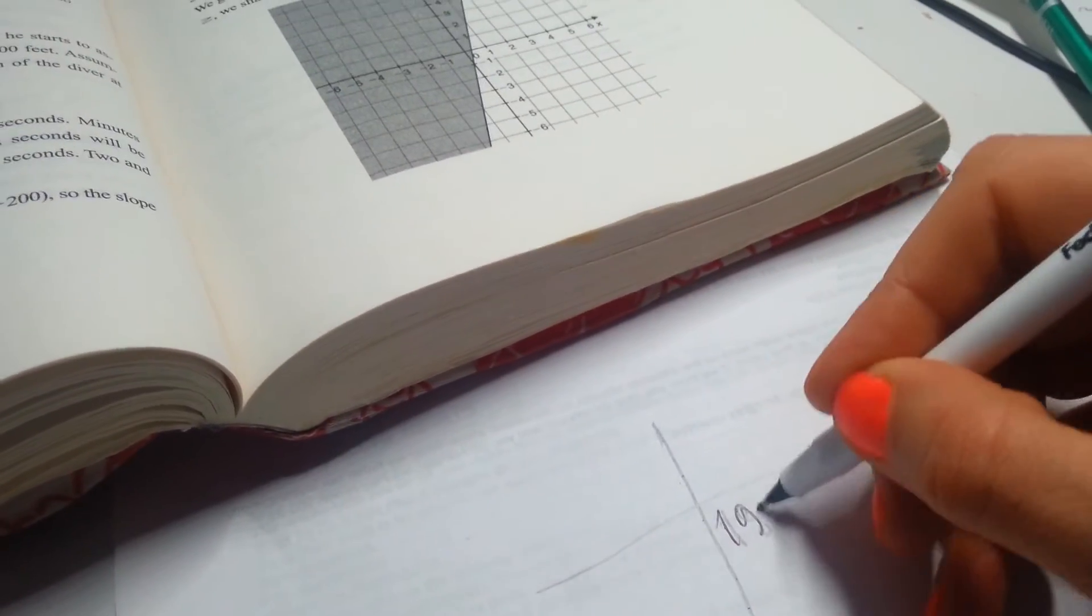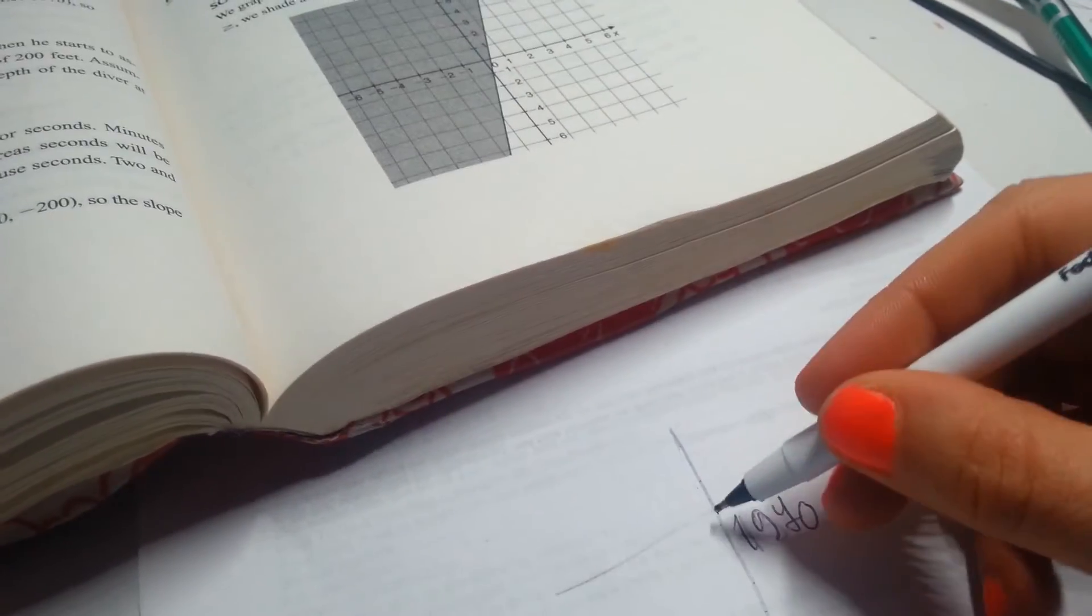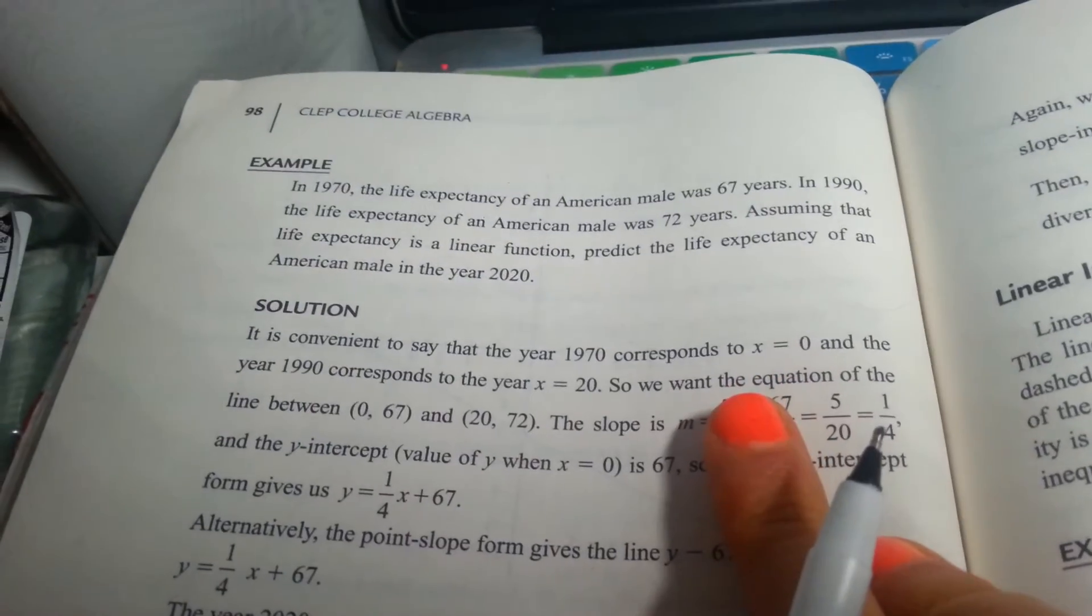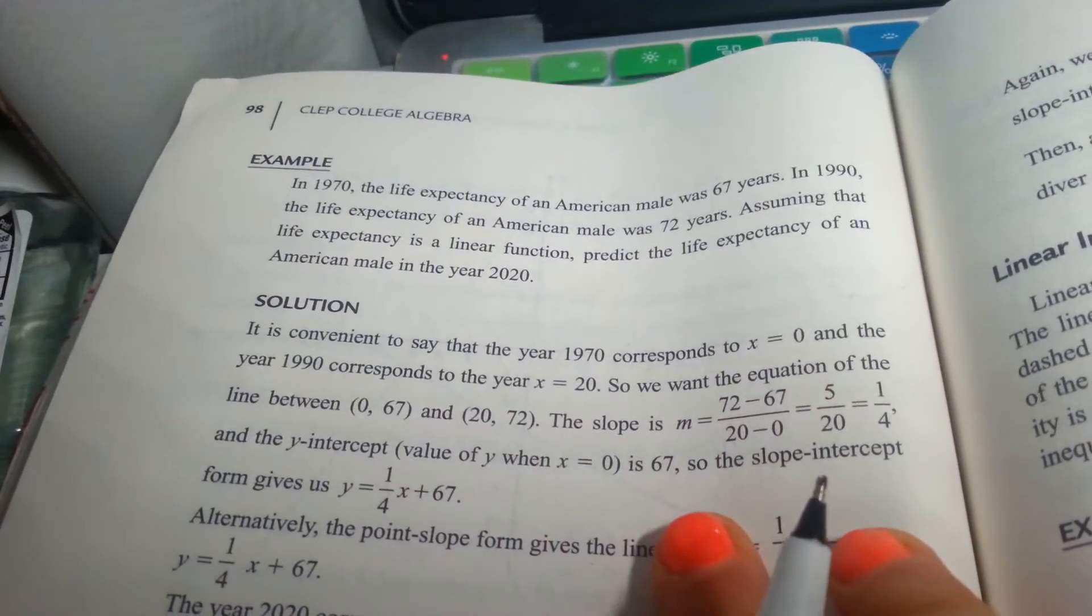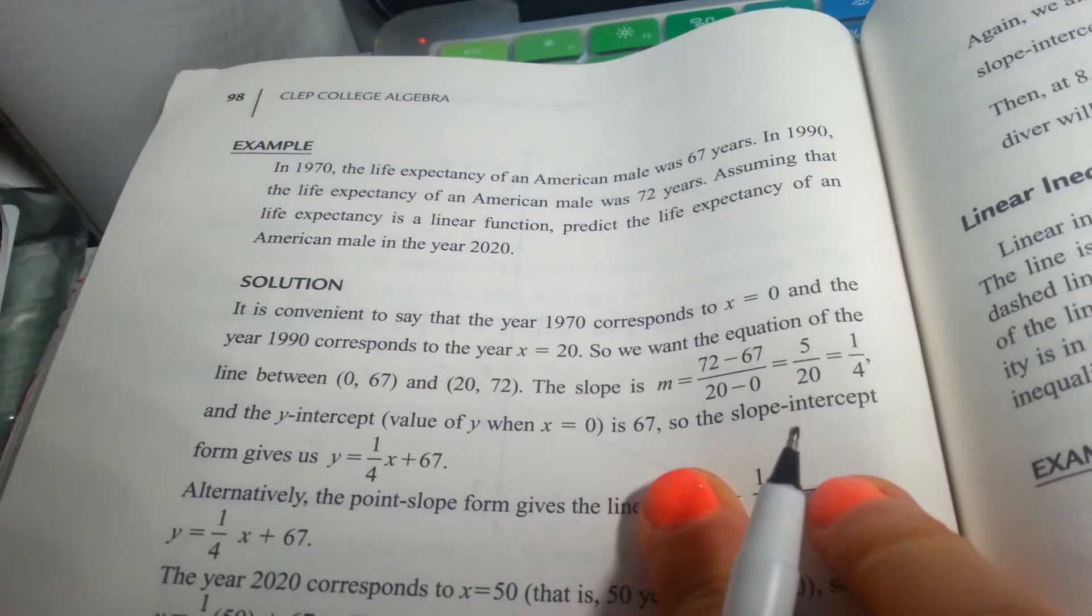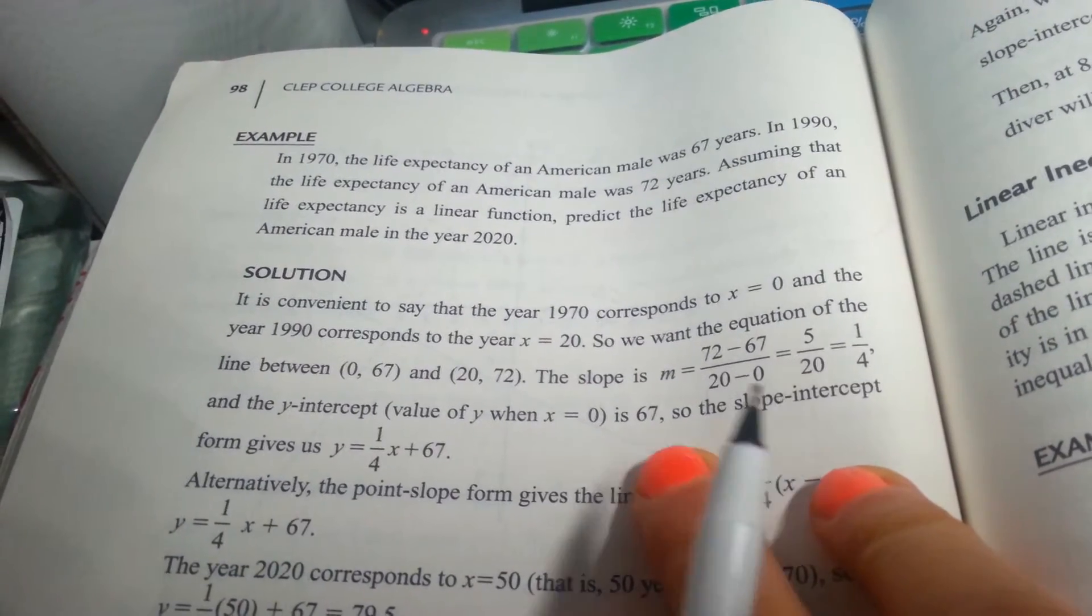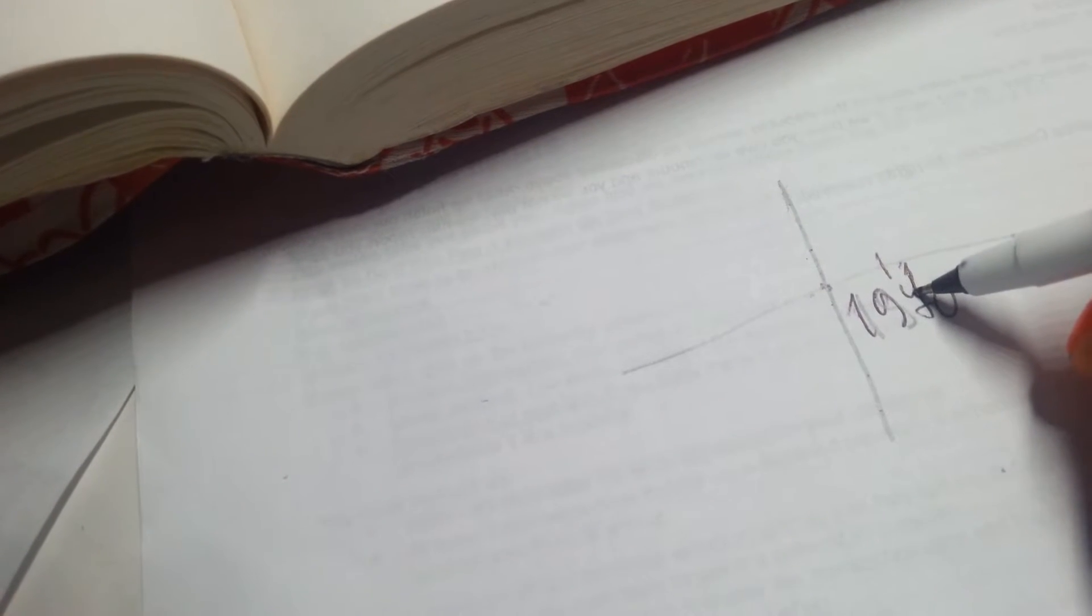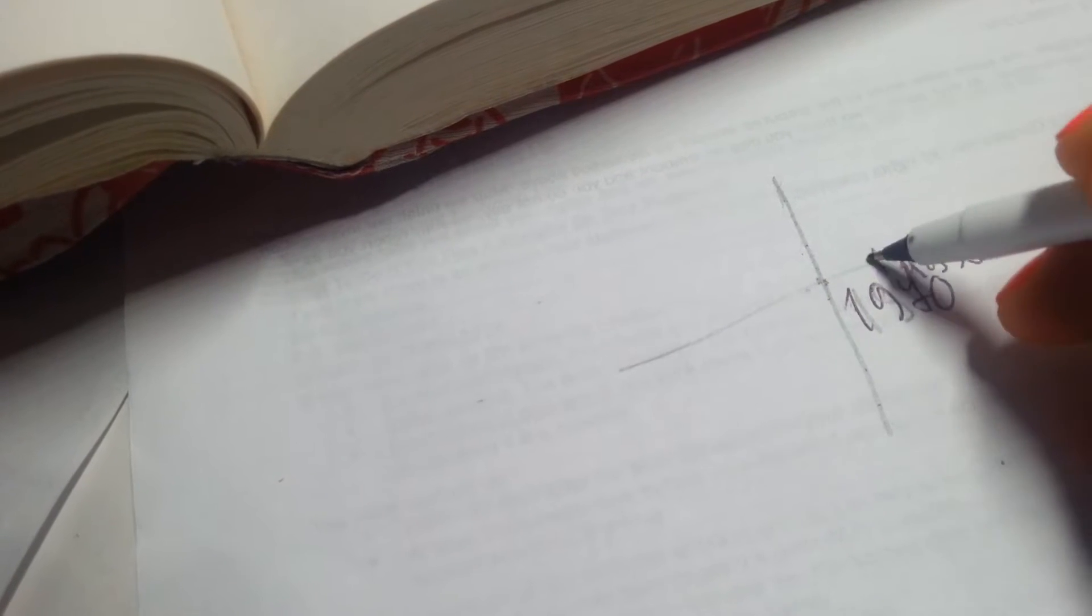Alright, so 1970 is gonna be 0. And then, we are gonna have 1990 is going to be 20 years later, is gonna be 20. So, 0. And this, oh my goodness, I wrote too big of a number, 1990, 90, 0. Right here.